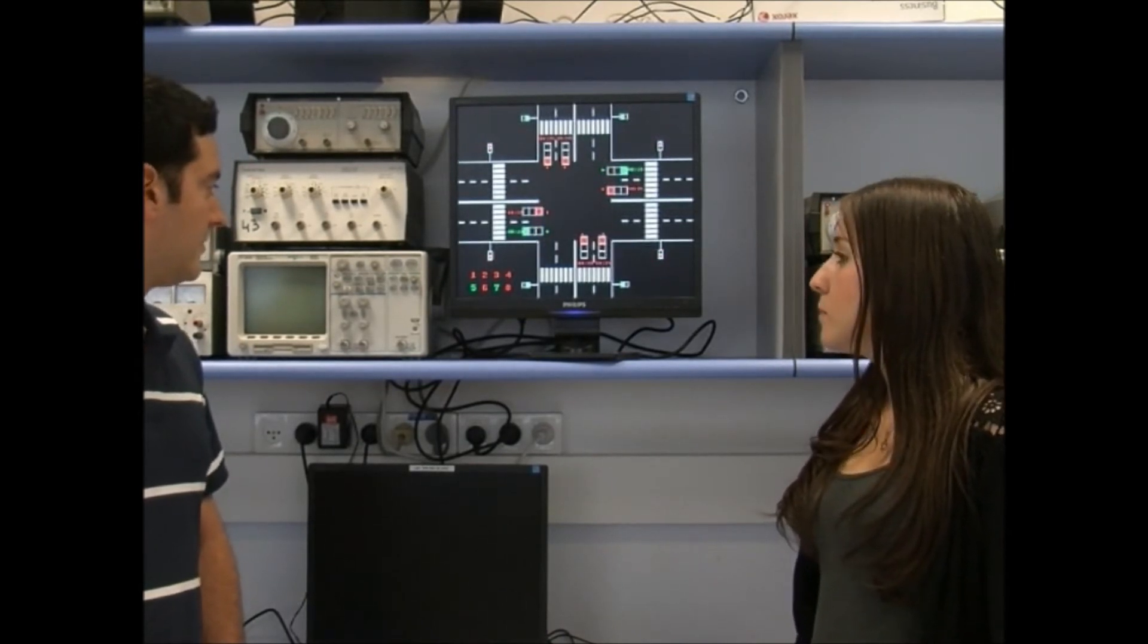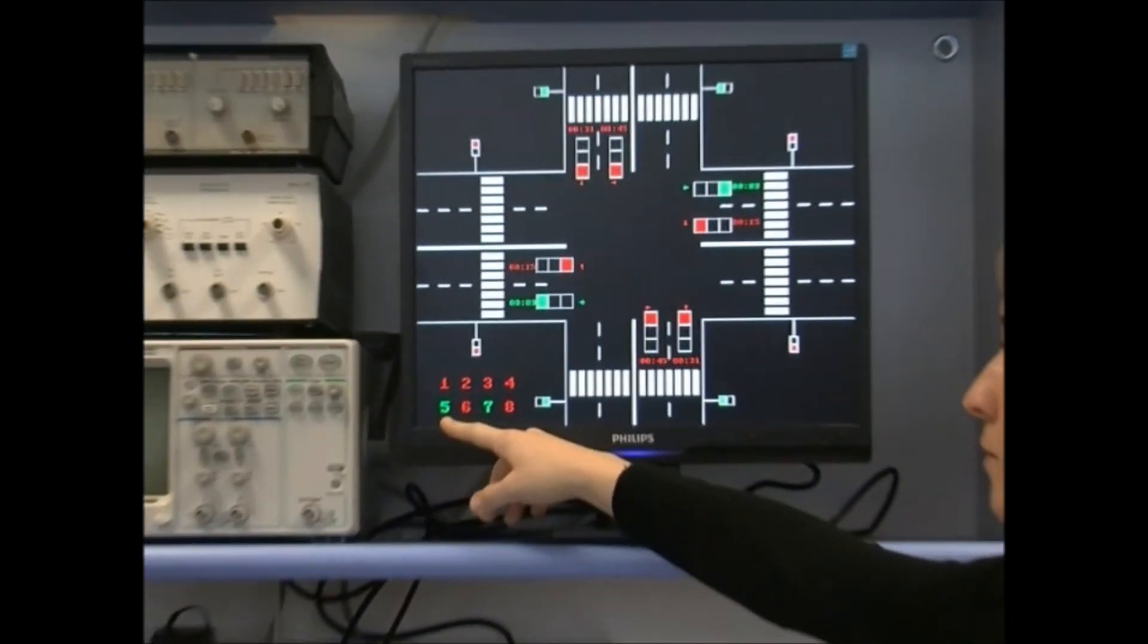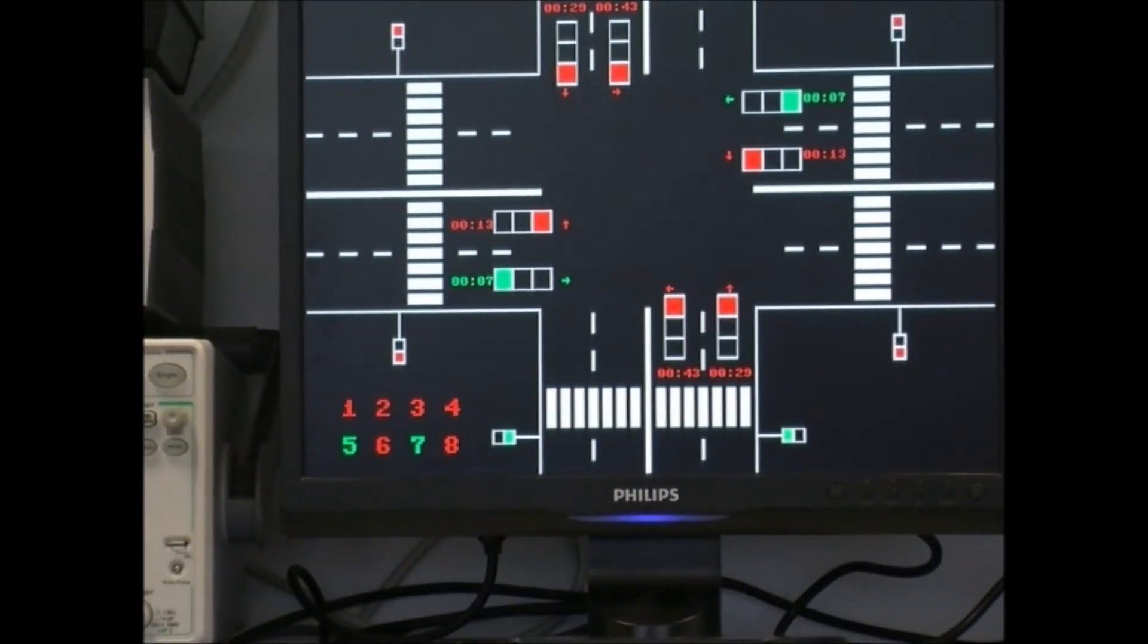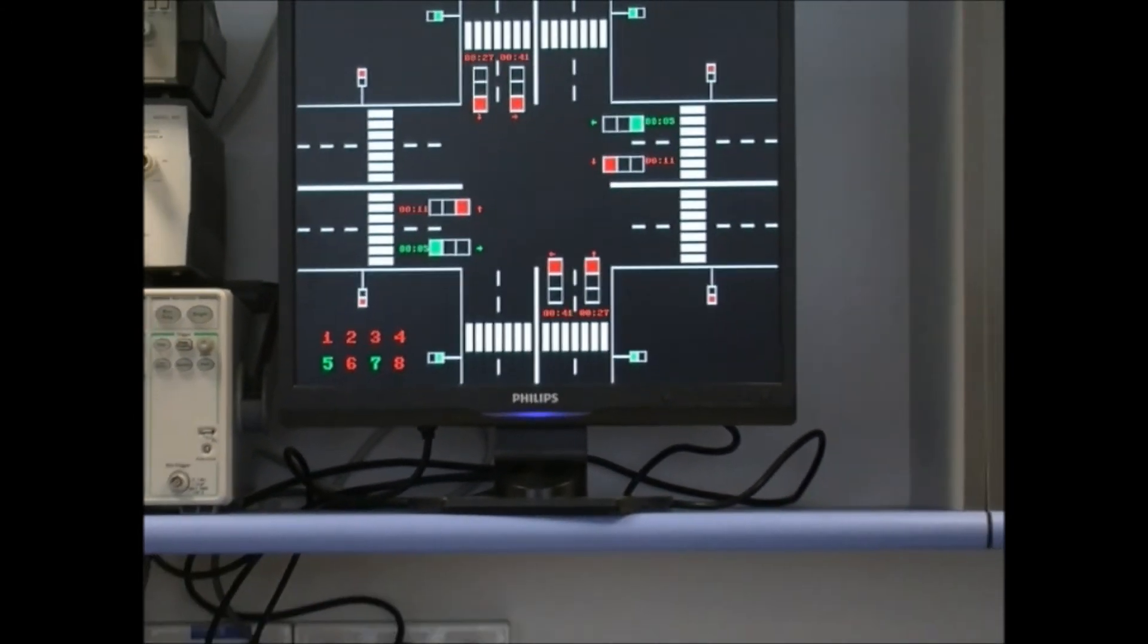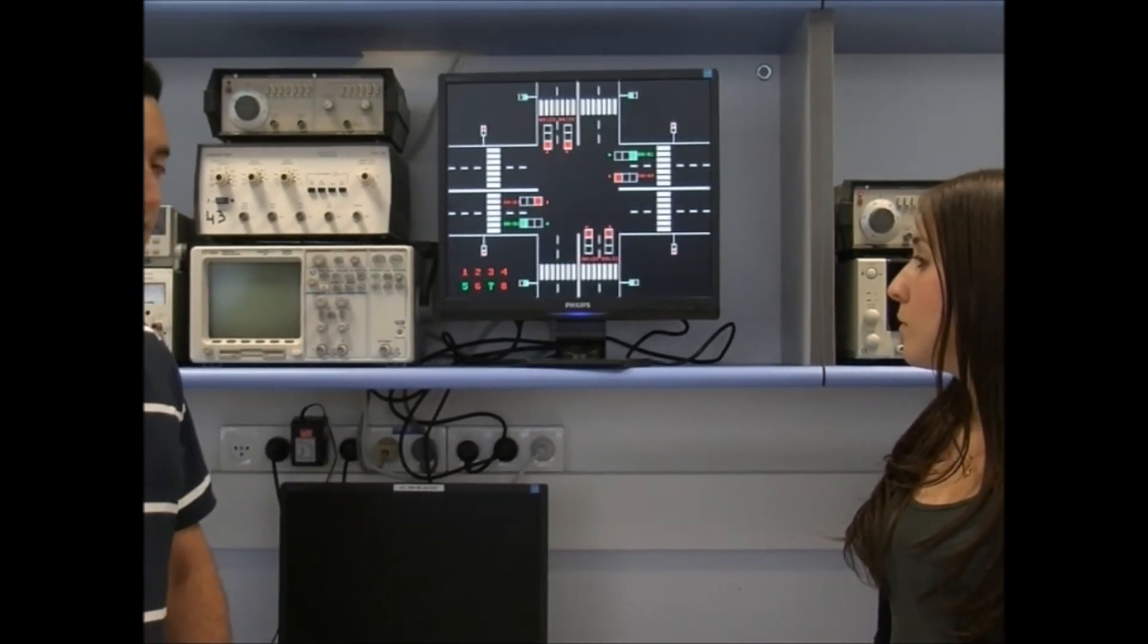On the left, at the bottom of the screen, we have a control display that shows the junction, traffic lights, and each status.